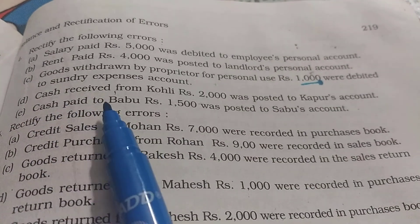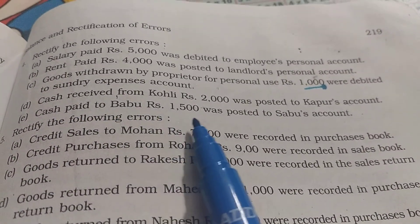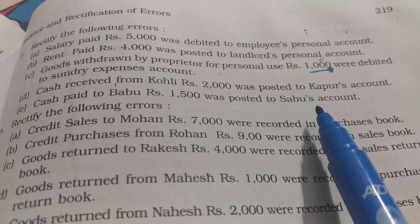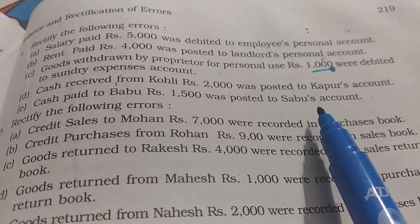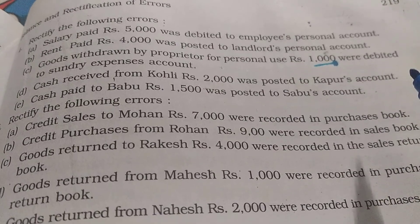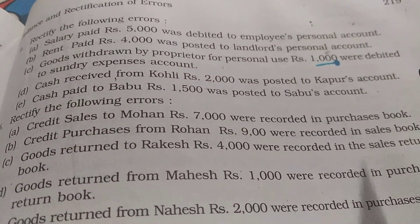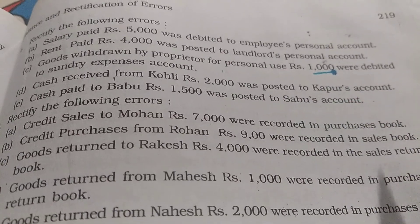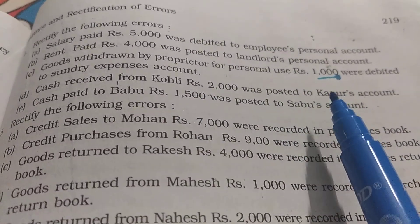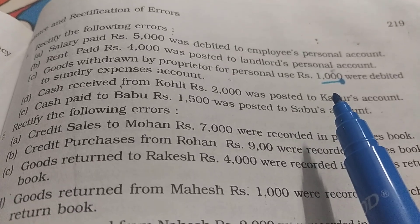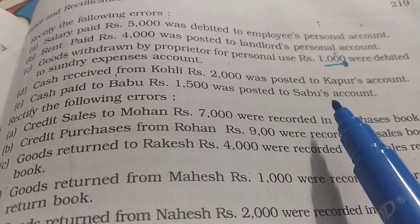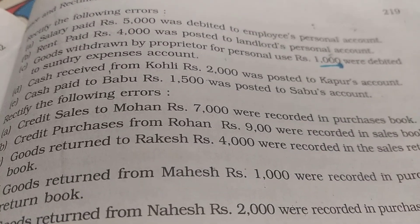The last entry: cash paid to Babu rupees one thousand five hundred was posted to Sabu's account. The rectified entry is Babu account debit to Sabu account, amount one thousand five hundred. In the narration: being cash paid to Babu, wrongly posted to Sabu's account, now rectified. I hope students it's clear to you. If you have any doubts you can ask through WhatsApp. Wait for the next video — till then, goodbye. Om Namah Shivaya.